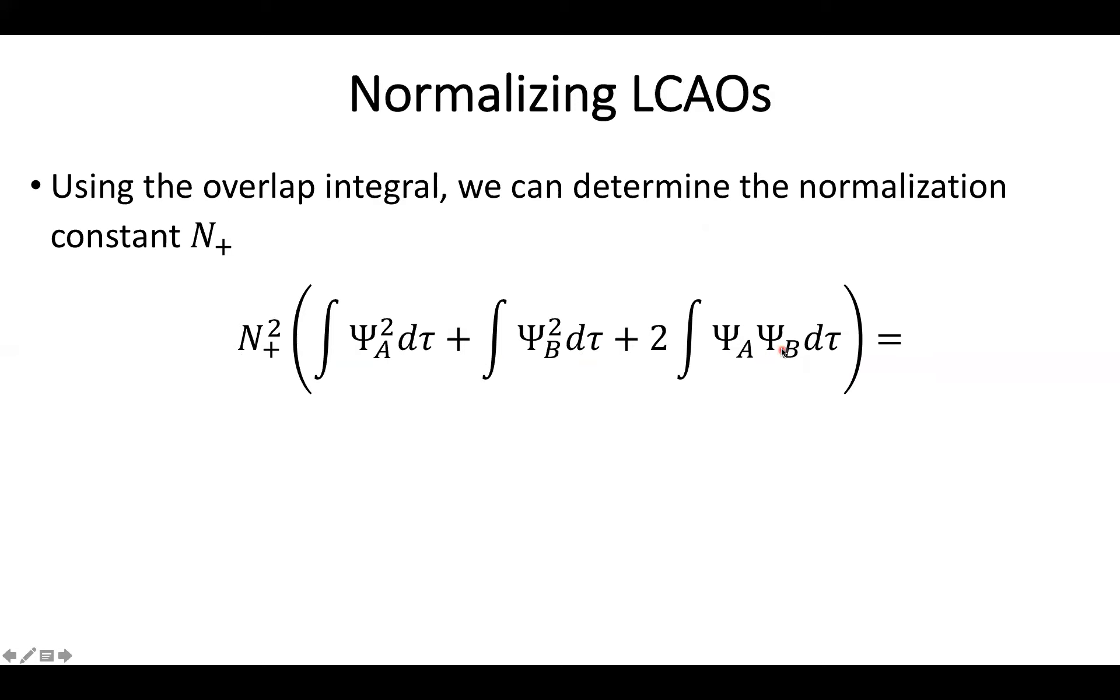So this whole inner term will drop down to 2 plus 2S. Well, we can make this a little bit more convenient and pull my factor of 2 outside the parentheses. And then I'll have the normalization constant squared times 2 times (1 + S). And again, because we're looking at normalization, it all ends up equaling 1.